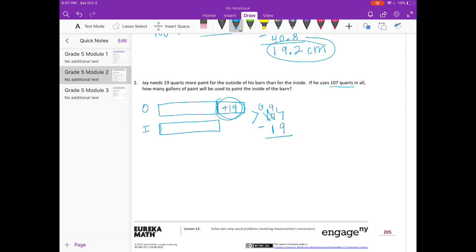Borrow. 17 minus 9 is 8, 9 minus 1 is 8. Together these two pieces are 88, and there's two equal pieces. So if we divide 88 divided by 2, we get 44. So this piece is 44. He uses 44 quarts for the inside, but we want to know how many gallons will be used inside. So 44 quarts equals how many gallons? We need to do 44 divided by 4, and we will get 11 gallons.